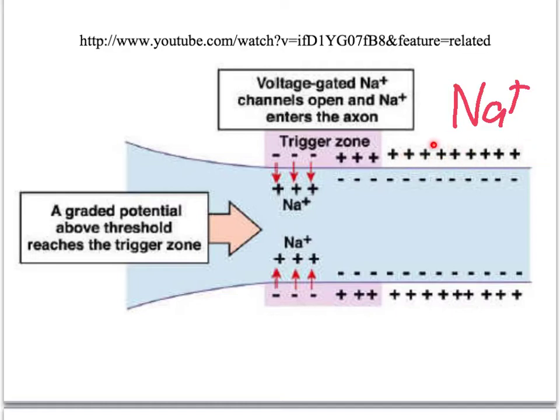And we have lots of positive ions relative to the inside, which would appear quite negative. When the cell membrane is stimulated by the nerve impulse, these sodium ions here all travel inside of the cell.